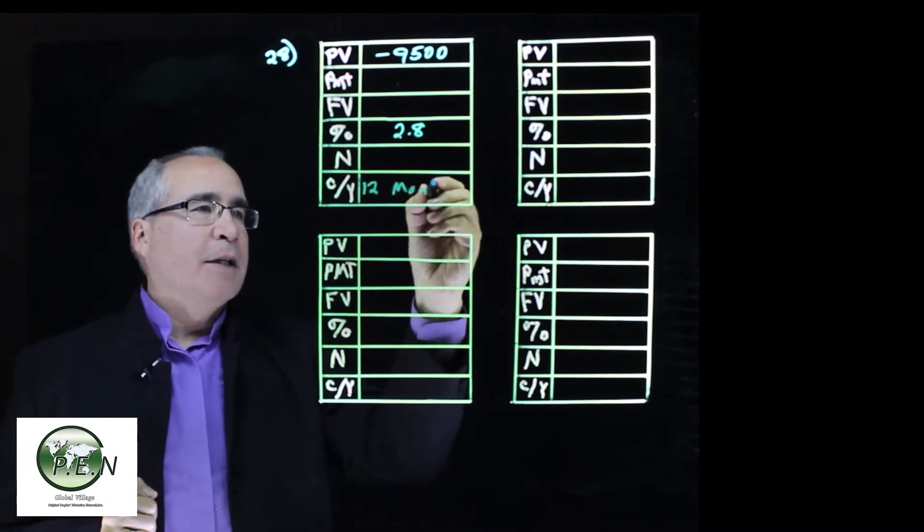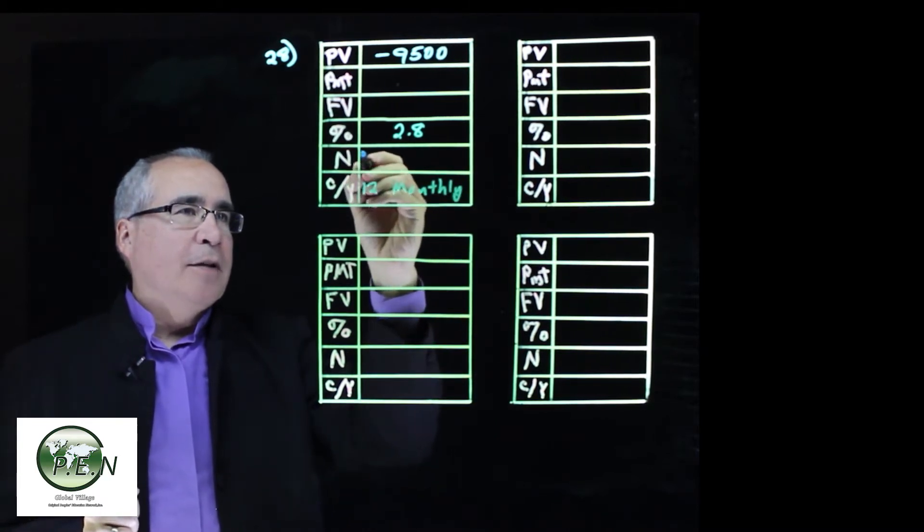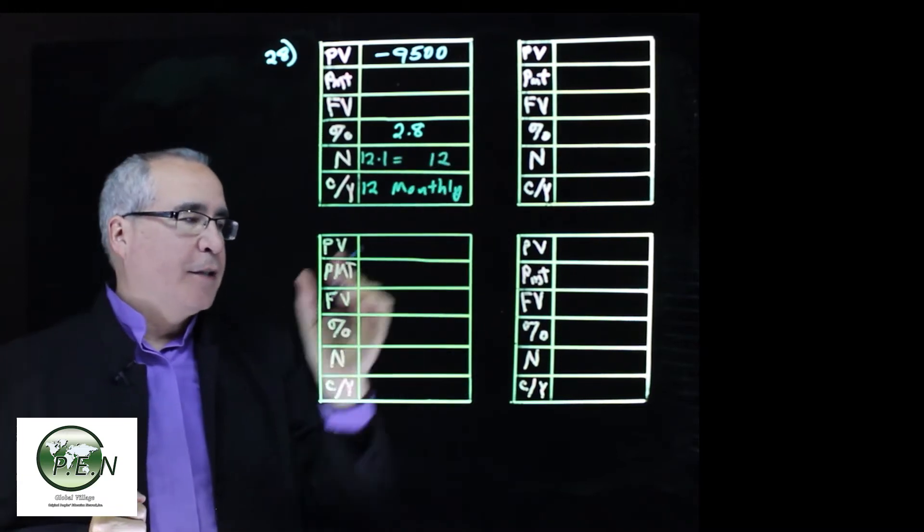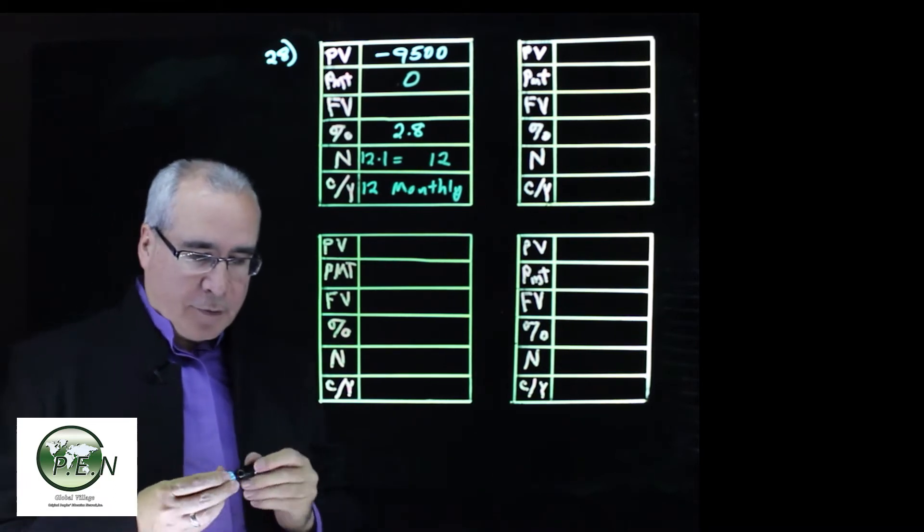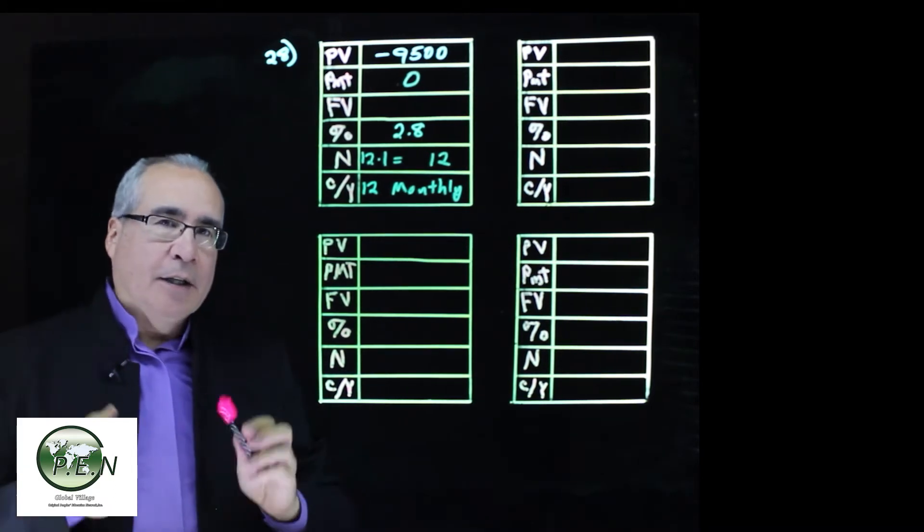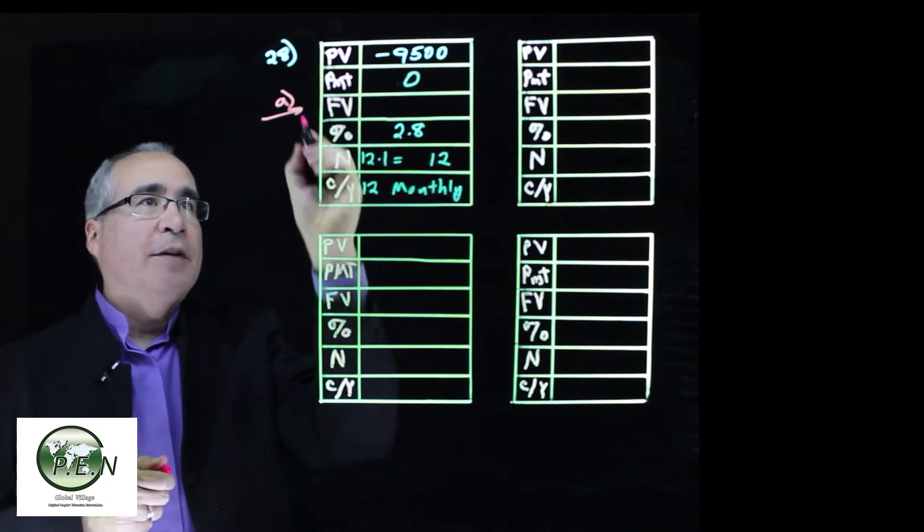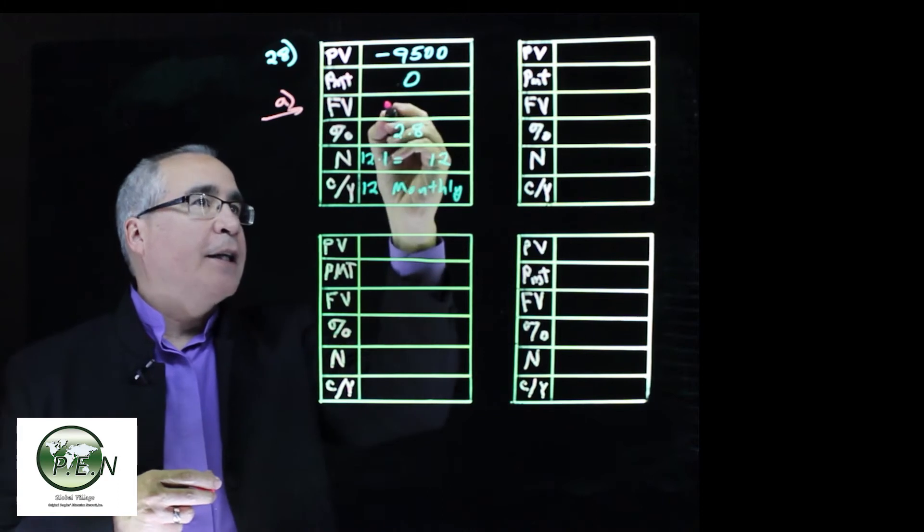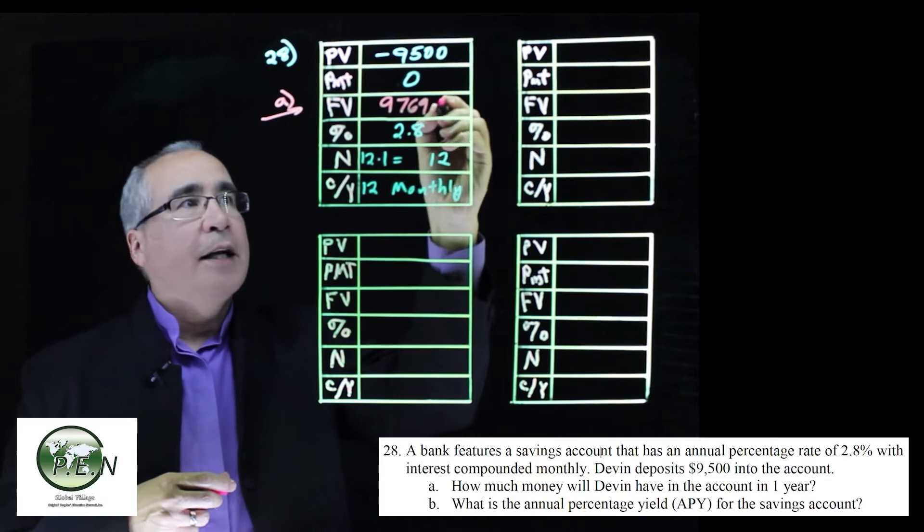Monthly compounding, so that's 12 times one year, or simply 12 is the number of periods. No additional payments. So the first thing we do is calculate the future value. This is going to give us the answer to the A part. Click on the future value, and we get $9,769.44.